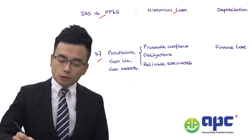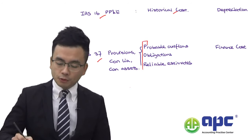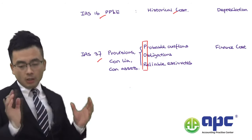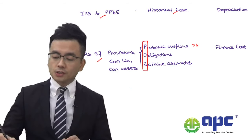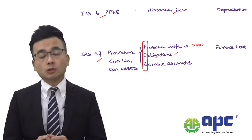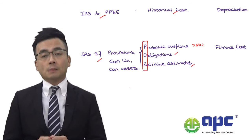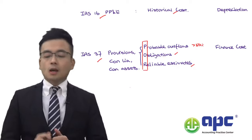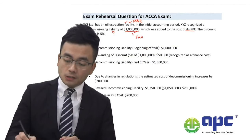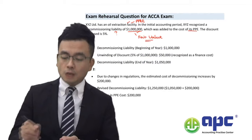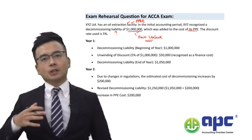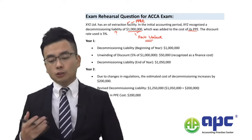I'm introducing my own mnemonic for provision accounting: the POR criteria. This means more than 50% probability that you'll need to pay, arising from a present obligation — here from a legal obligation according to environmental law — and you can make a reliable estimate. That $1 million would be the fair value, because you discount future cash flows into today's terms; present value is an example of fair value. You can reliably estimate this based on experience.